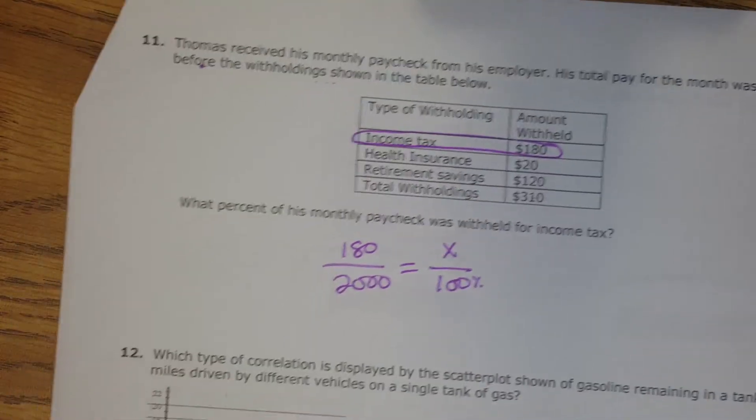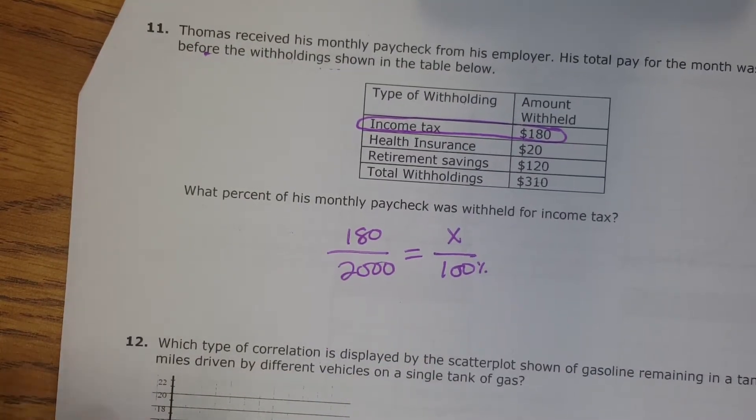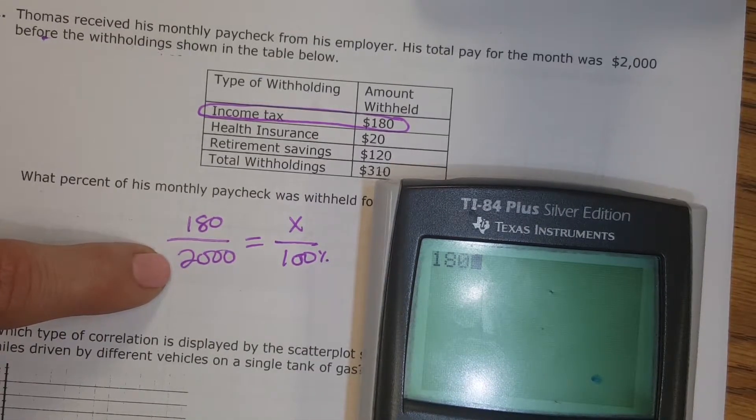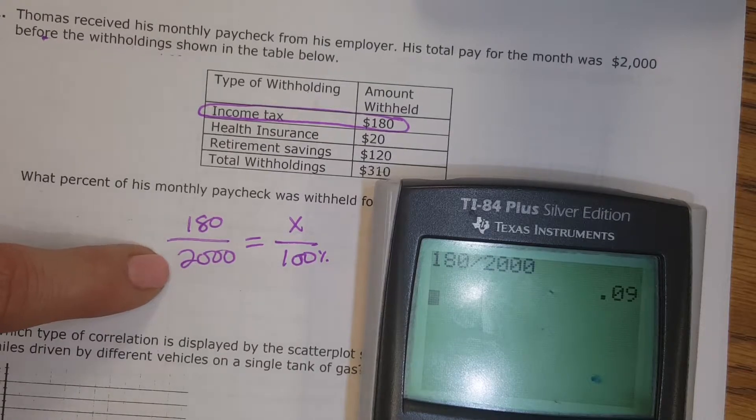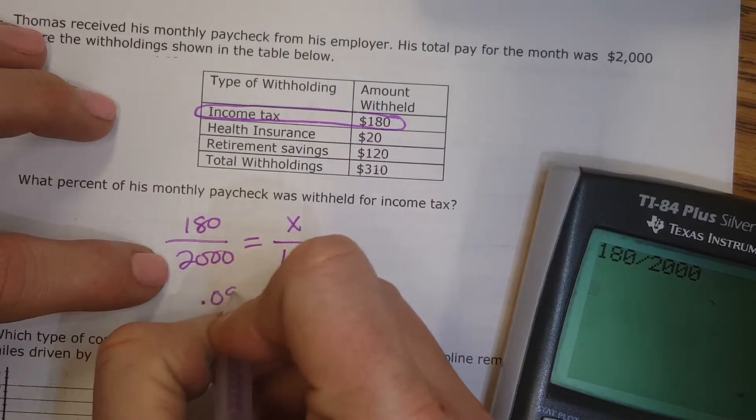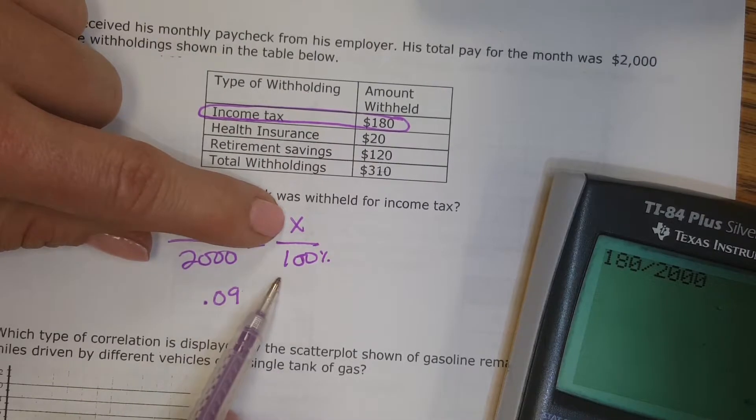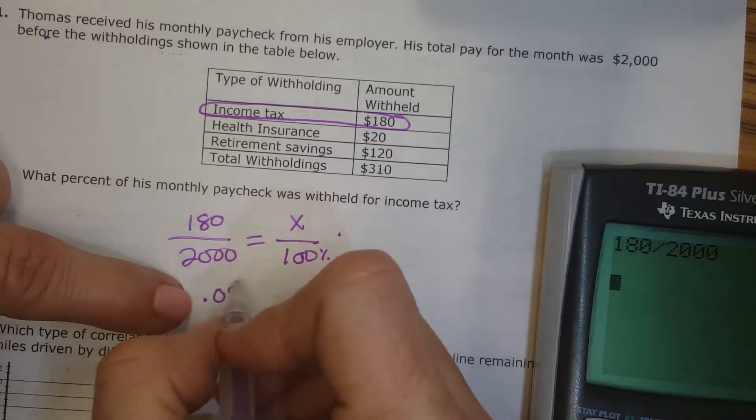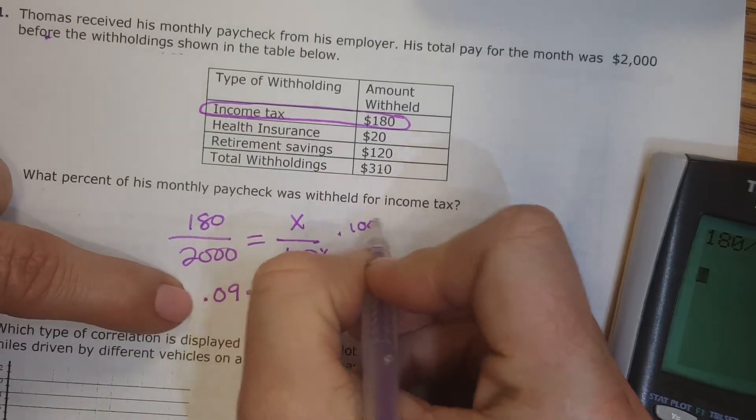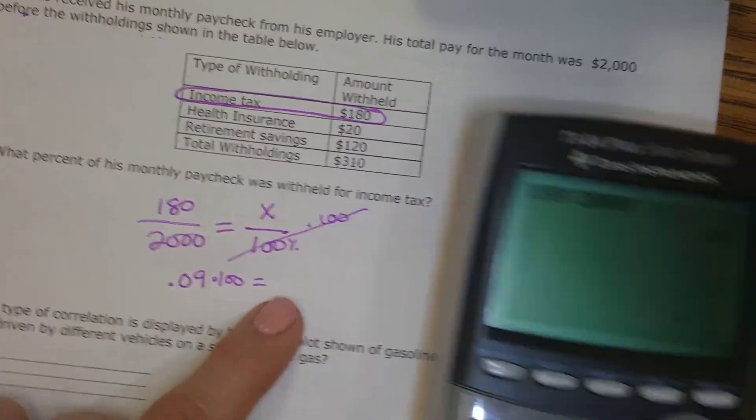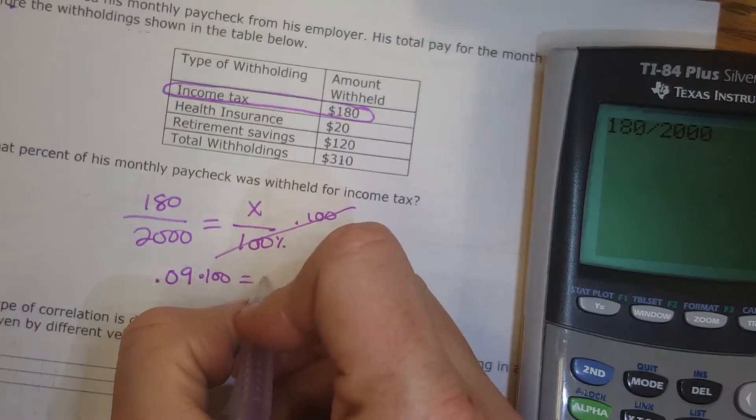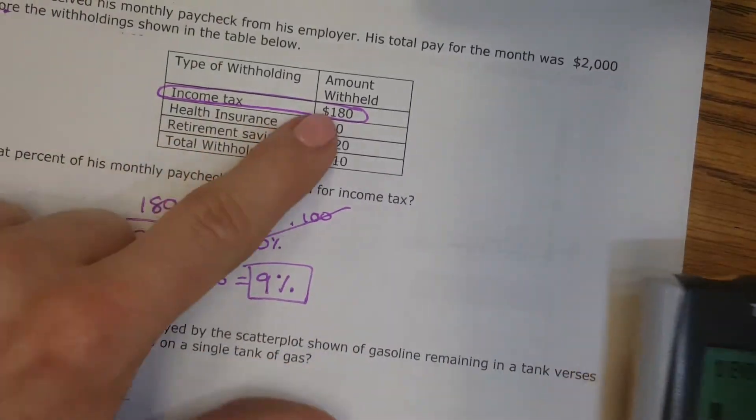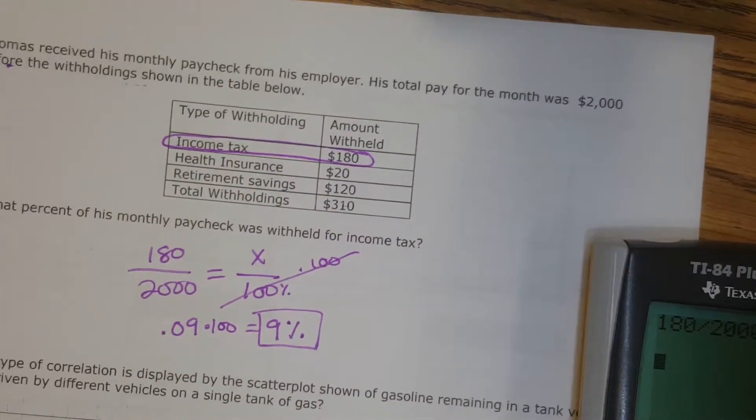So you can solve this multiple ways. You can solve it by cross-multiplying if you know how to do that. I like to go ahead and divide this out. So I get 0.09. And then to get the x by itself, right now it's being divided by 100. So the opposite would be to multiply both sides by 100. So I'm going to multiply this by 100. And that would give me my x, which is 9%. So 9% of his total pay was in his income tax that he had to get taken out.